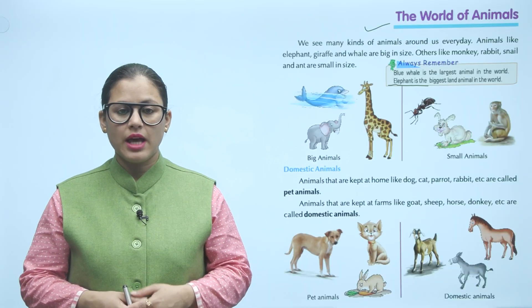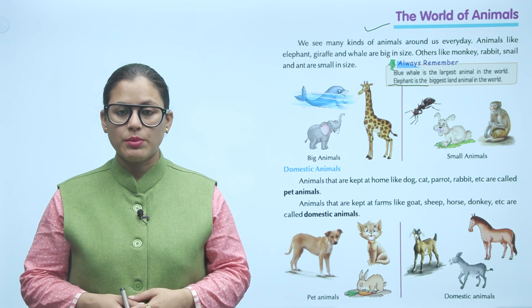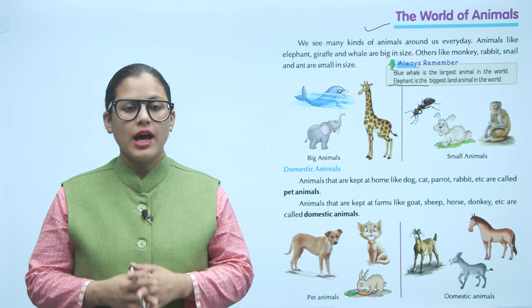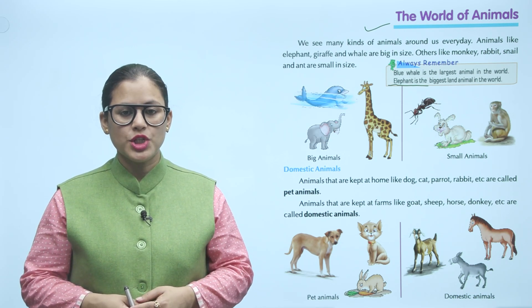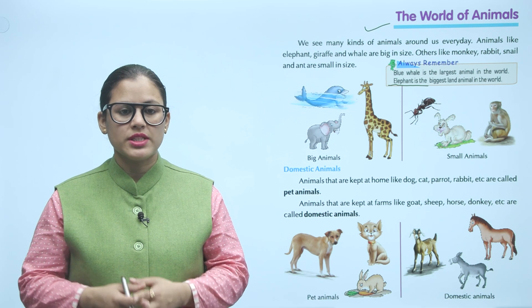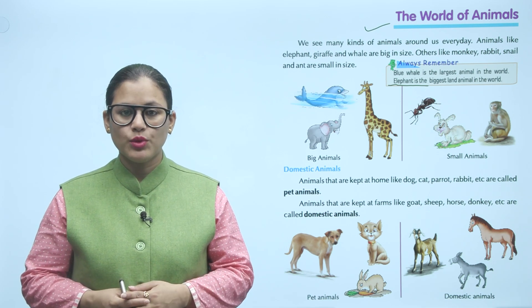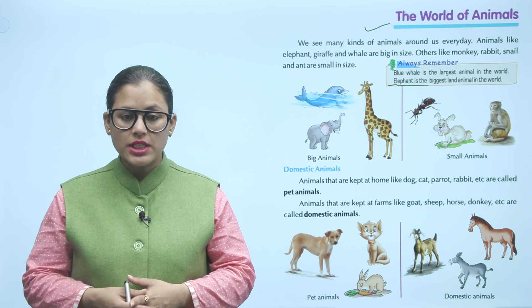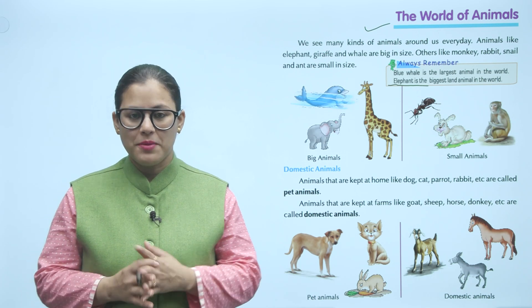Domestic animals: animals that are kept at home like dog, cat, parrot, rabbit etc are called pet animals. Animals that are kept at farms like goat, sheep, horse, donkey etc are called domestic animals. Pet animals are the ones that we keep in the house and domestic animals are the ones that we keep in the farms.